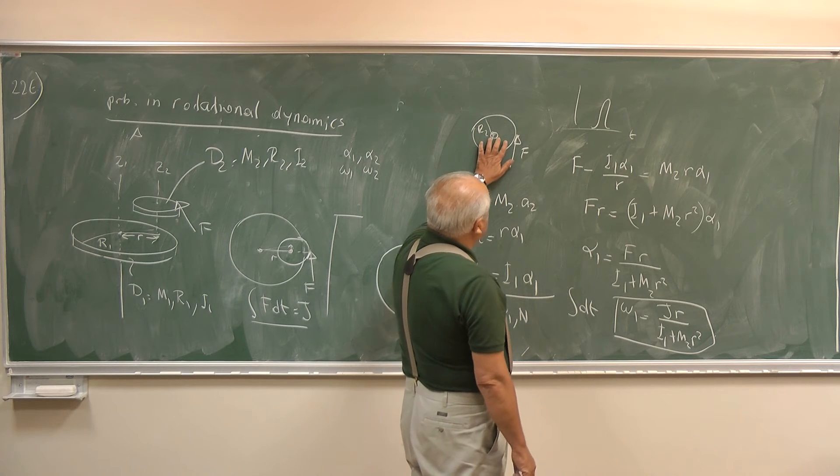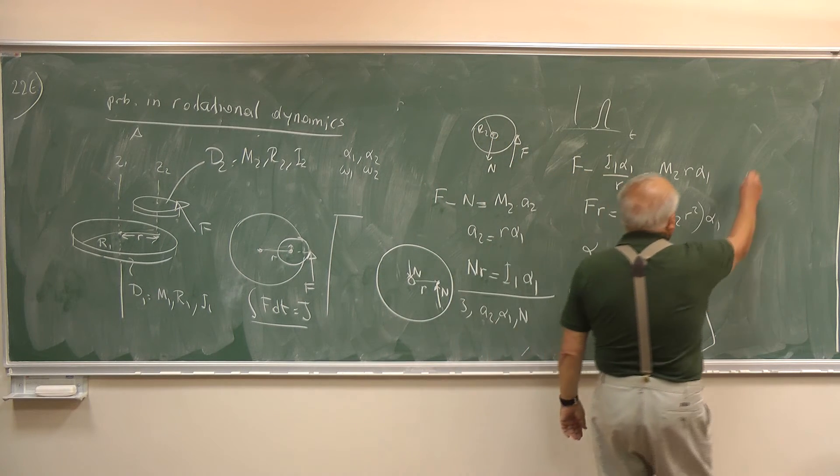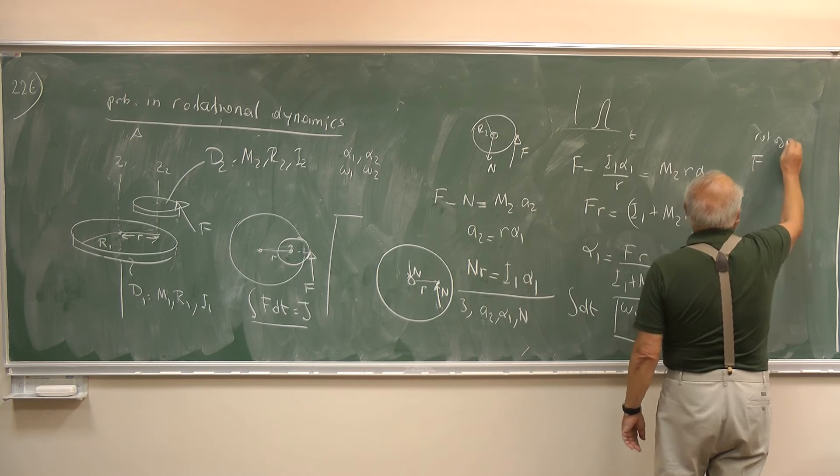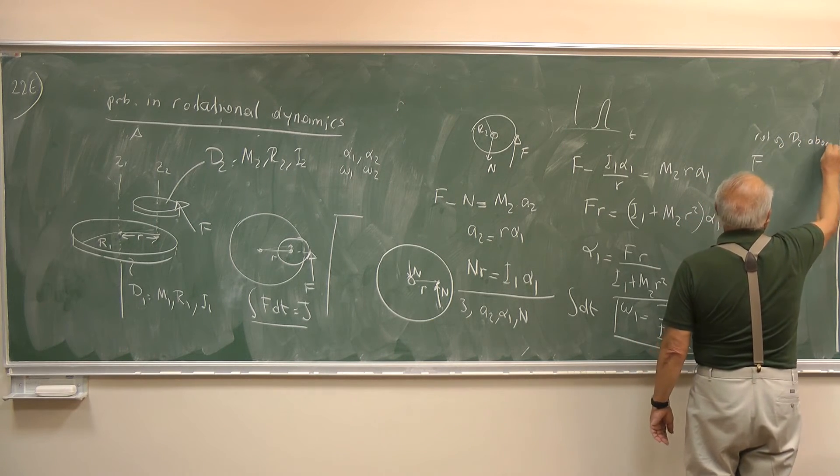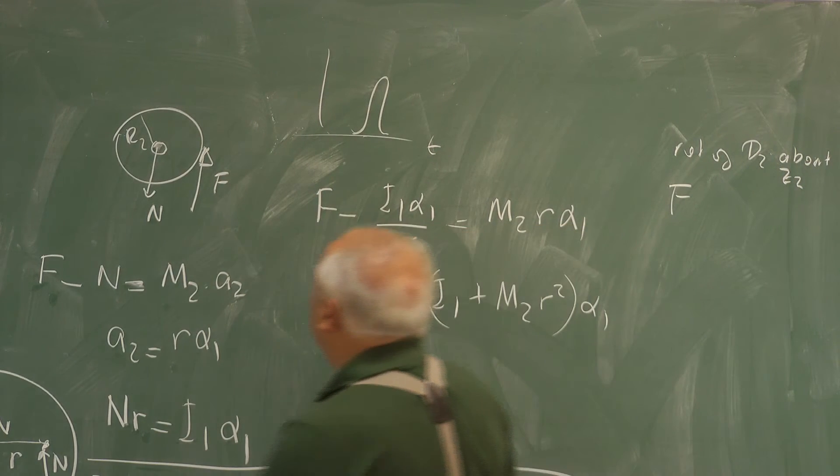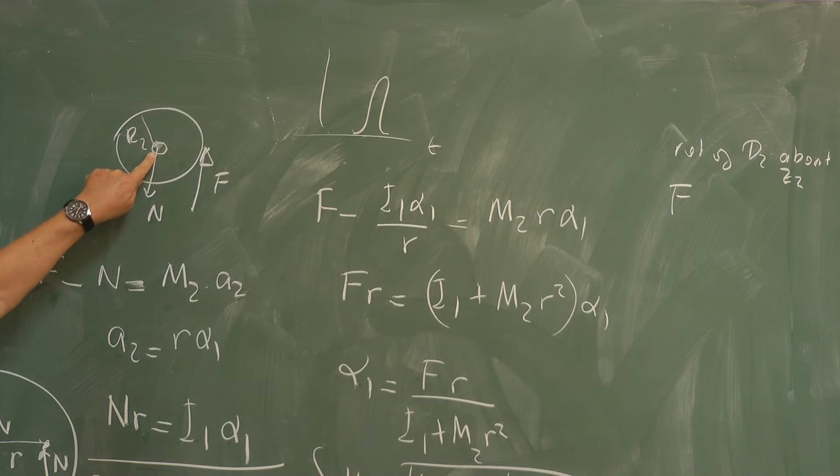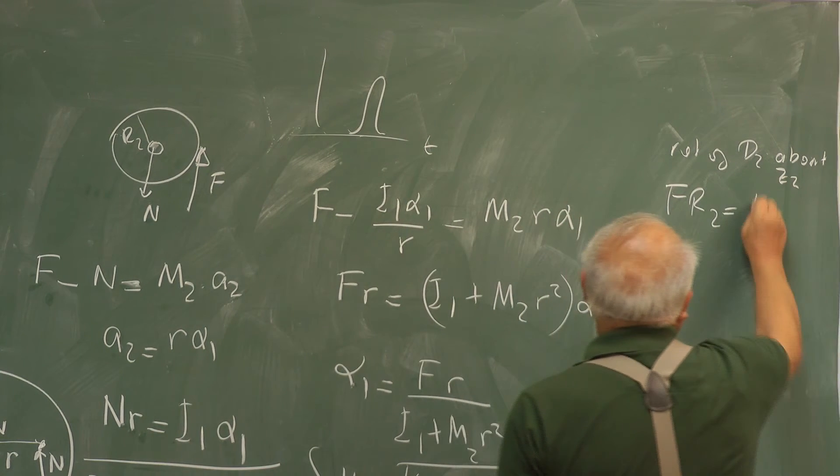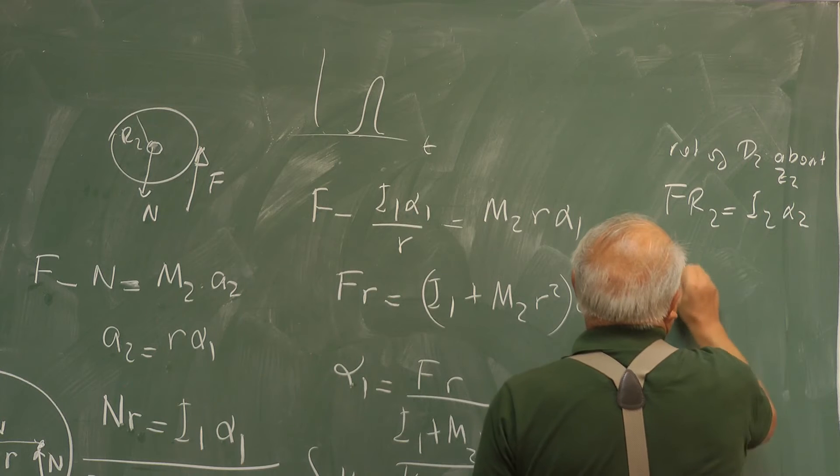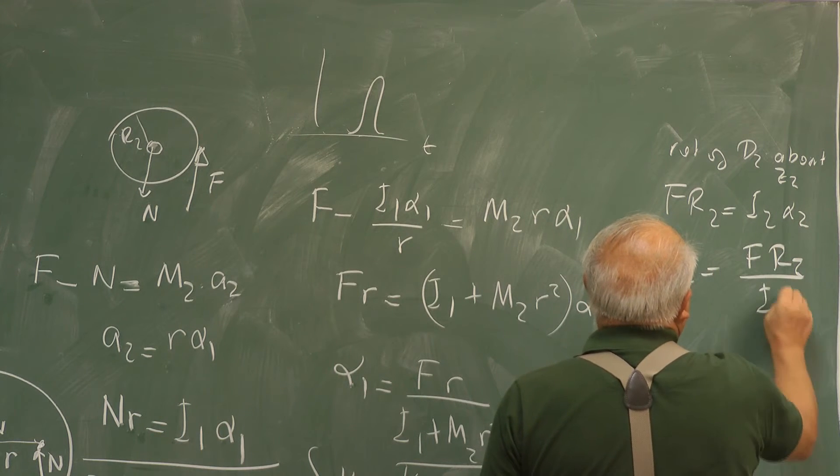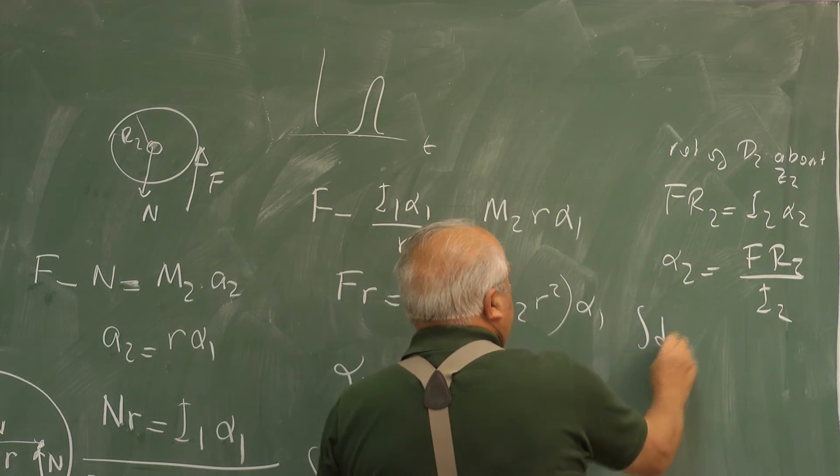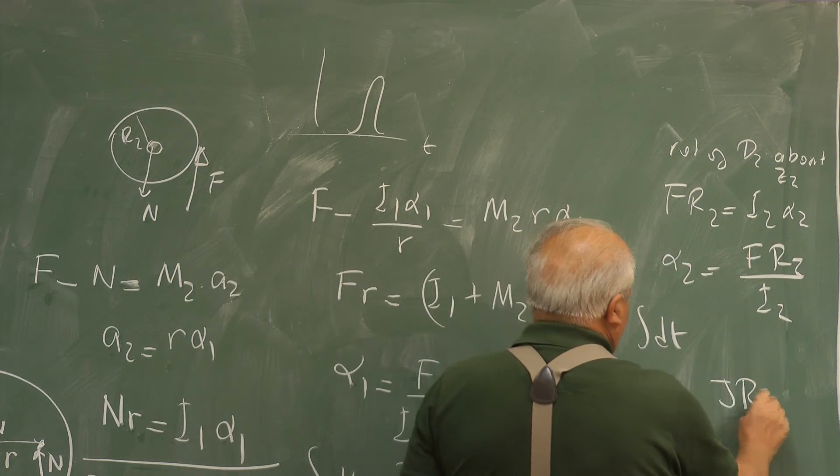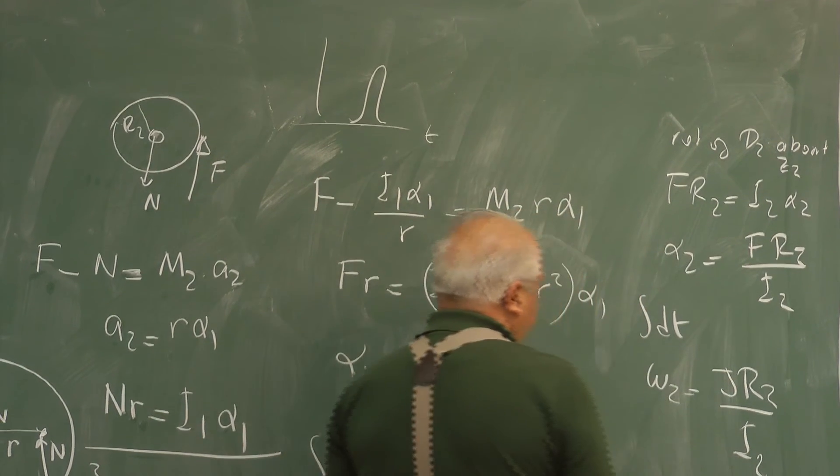And all right. What about the rotation of the small disk? FR2. So rotation of D2 about Z2. N does not give a torque about this axis. Only this force gives. So F times R2 is I2 times α2. Therefore, α2 is FR2 over I2. Or if we apply T, this thing, this becomes ω2 is equal to JR2 over I2. So that's the.